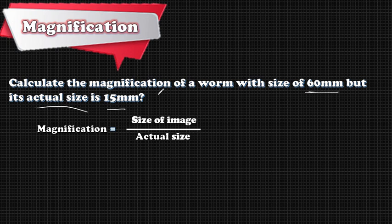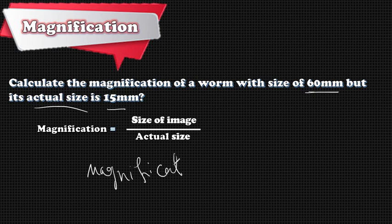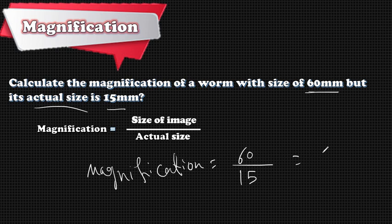So magnification equals the size of the image, which is 60, over the actual size, which is 15. 60 divided by 15 equals 4. So the worm looks 4 times bigger — this is the magnification.